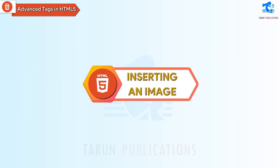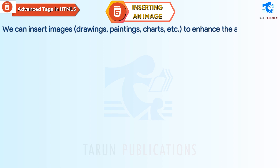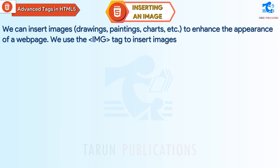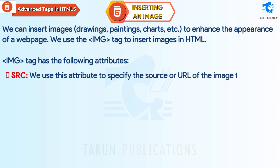Inserting an Image. We can insert images, drawings, paintings, charts, etc. to enhance the appearance of a web page. We use the IMG tag to insert images in HTML. The IMG tag has the following attributes. SRC: We use this attribute to specify the source or URL of the image that is to be inserted into the web page.